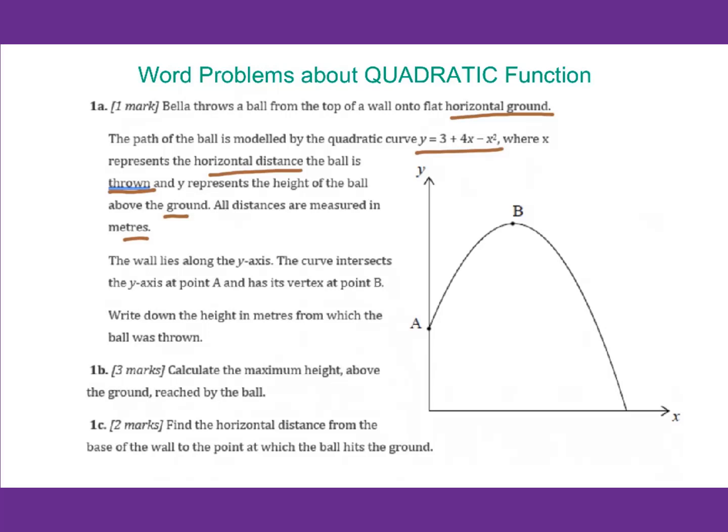The wall lies along the y-axis, and the curve intersects the y-axis at point A and has its vertex at point B. Write down the height in meters from which the ball was thrown.